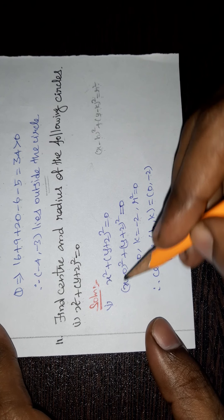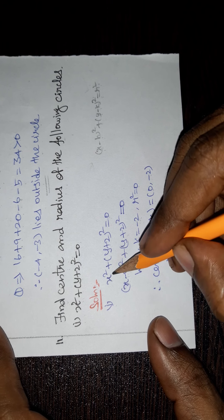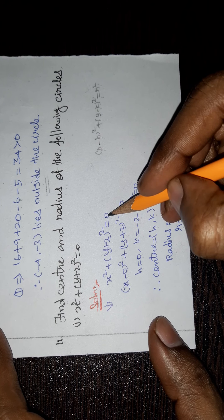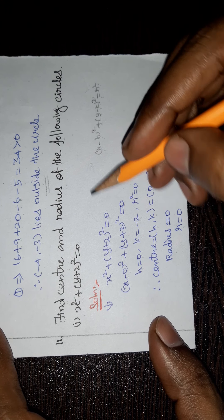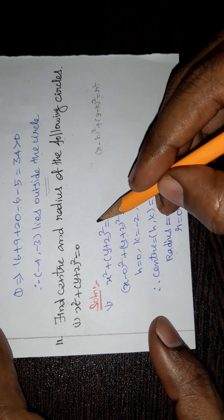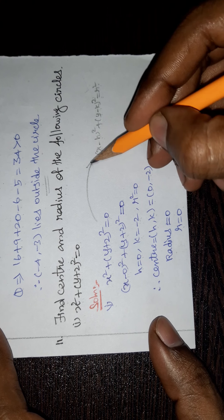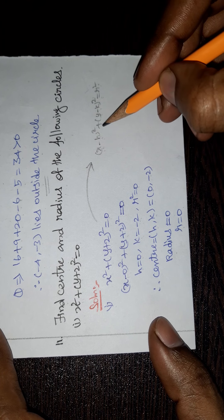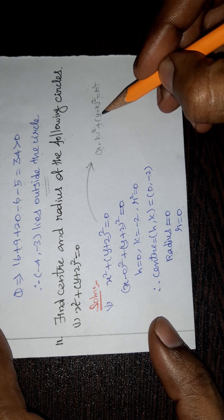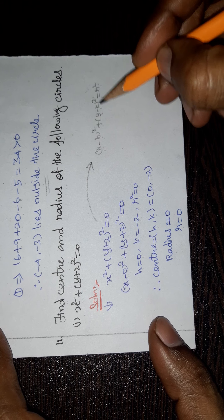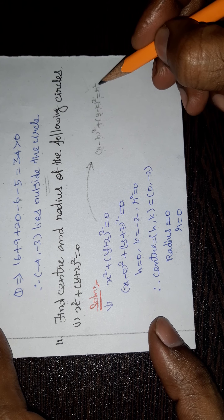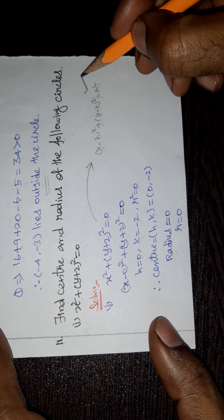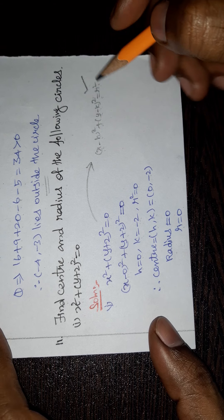Solution. The given equation is x² + (y + 2)² = 0. This equation is similar to the standard form x minus h whole square plus y minus k whole square equal to r square. This is the equation of a circle in standard format.